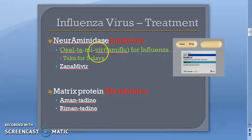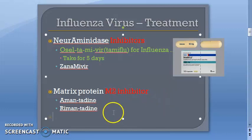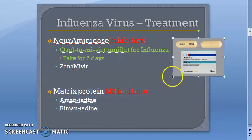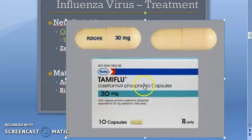Influenza is treated with oseltamivir, a neuraminidase inhibitor also called Tamiflu, taken for five days. An alternative is zanamivir. Matrix protein M2 inhibitors like rimantadine and amantadine are also available, however the virus has become resistant to these. So the primary drug is Tamiflu — oseltamivir phosphate.